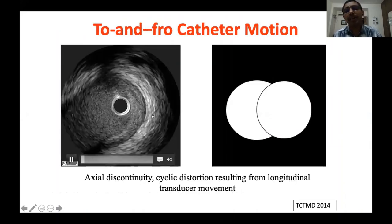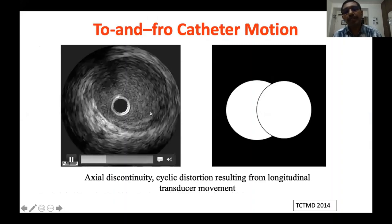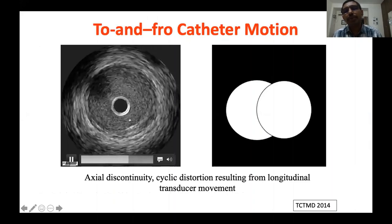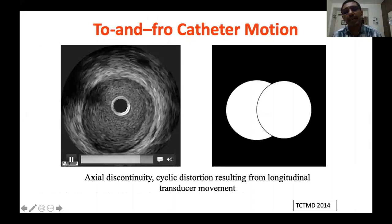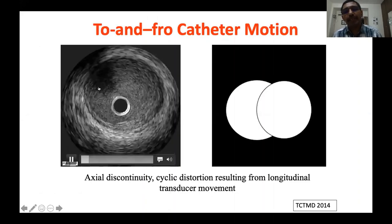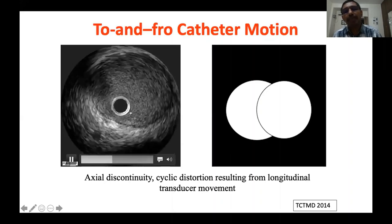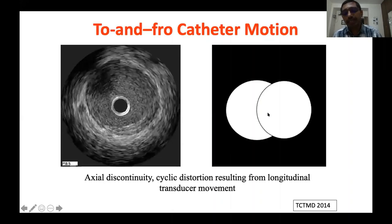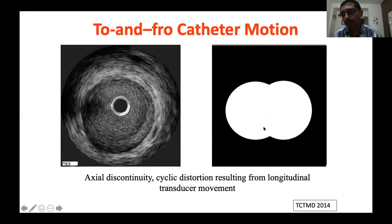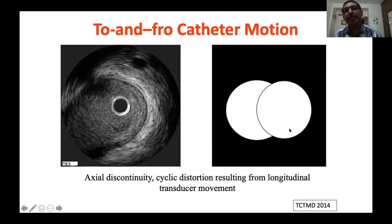The second artifact is to-and-fro artifact. When doing IVUS imaging in AV groove arteries — RCA and LCX — they move vigorously during the cardiac cycle, causing movement of the catheter relative to the artery before one complete circle image is formed. Whatever you get in the image is a combination of two circles rather than a single circle image, making measurements unreliable.